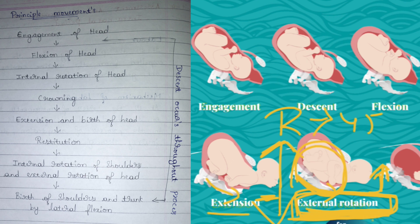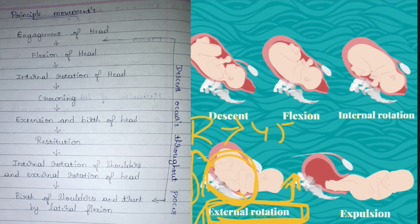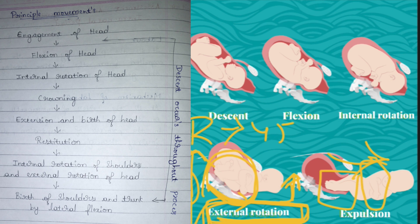Next is expulsion. The face has already come out; next the shoulder, trunk, and then legs come out — the baby is delivered. This expulsion takes place in lateral flexion. Remember the position in which the baby comes out — in lateral flexion. Descent is a process that follows throughout the labor. These are the principal movements of labor.